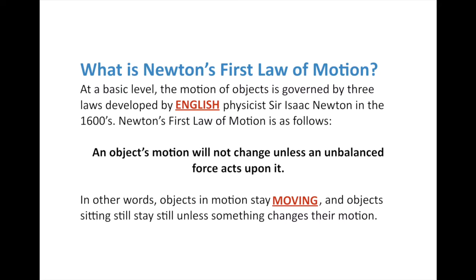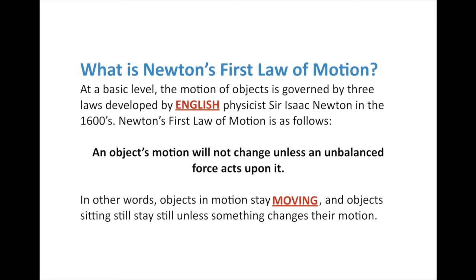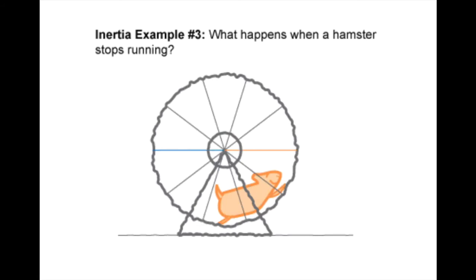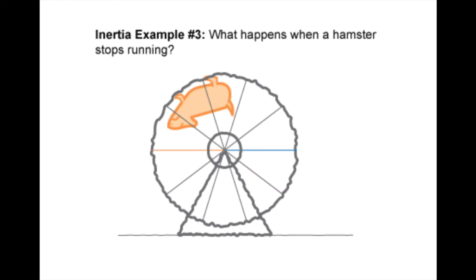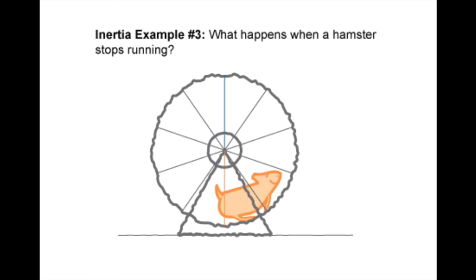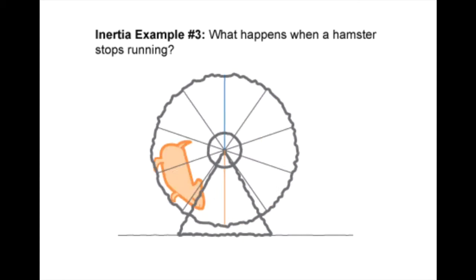The computer, smartphone, or tablet you're watching this on — it's not just going to jump up and fly away. The only way it's going to do that is if an outside force does it, like you throw it up in the air. What happens when the hamster stops running? The wheel's still going — it doesn't stop unless something stops it.